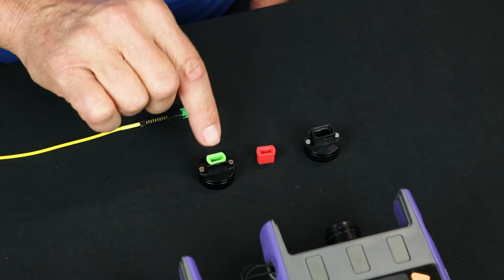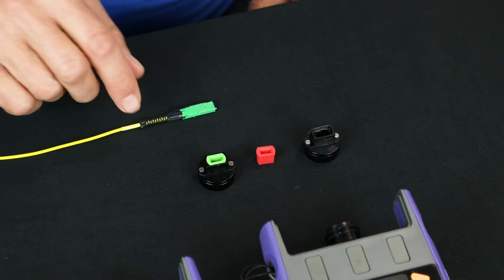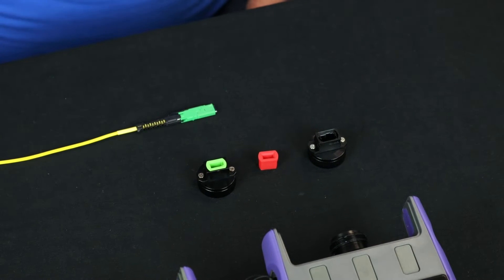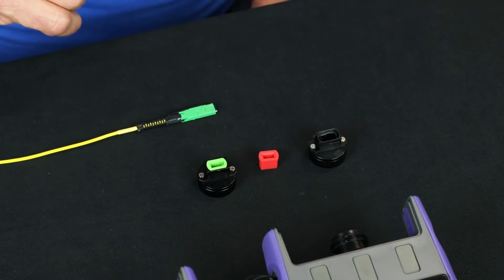And in this same adapter configuration, this green insert is for the MMC or the SNMT. The red one is just for an MT adapter. So if you've just got a bare MT adapter, 12, 24, 16, 32, we can take that into the system and measure it.